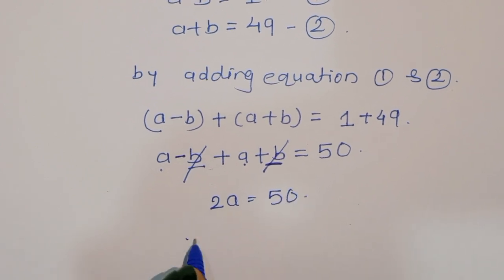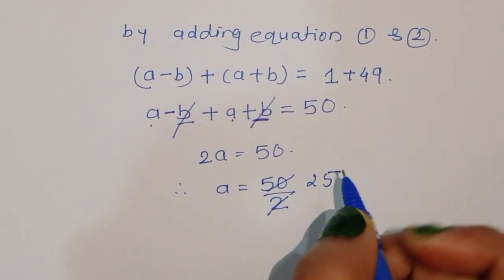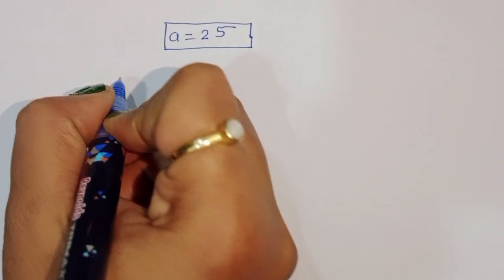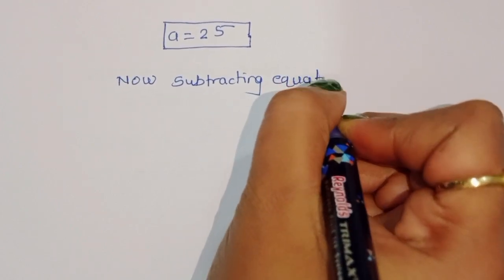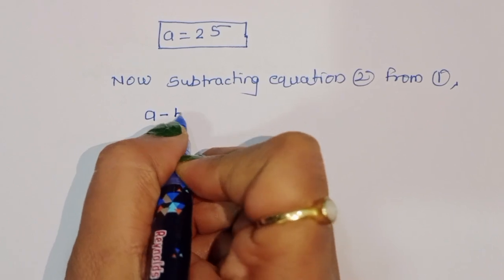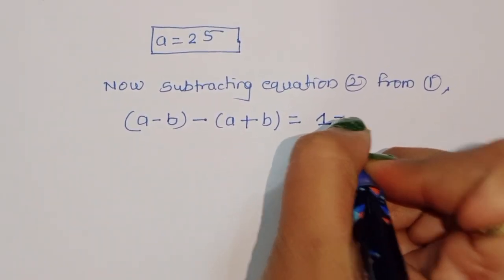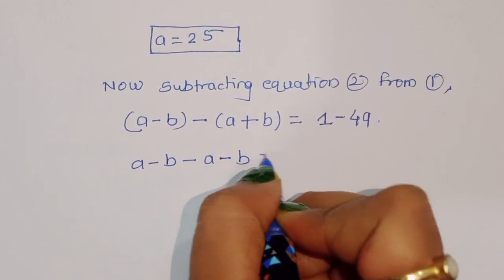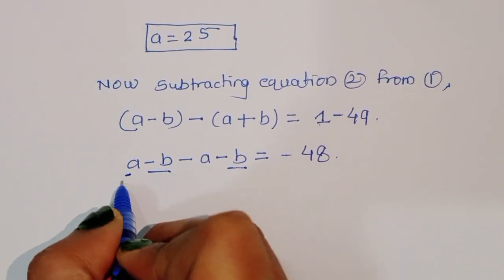The minus b and plus b cancel. So 2a equals 50, therefore a equals 50 divided by 2, which is 25. We got the value of a equals 25. Now subtracting equation 2 from equation 1, we get a minus b minus a plus b equals 1 minus 49.